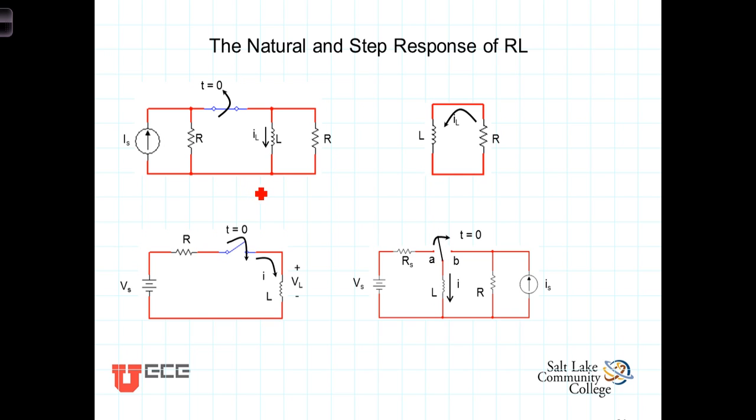Consider this first circuit here. We have a current source with a parallel resistor and a switch that has been closed for a long time. Closed for a long time means that any changes in current and voltage have died out and the current has been constant.